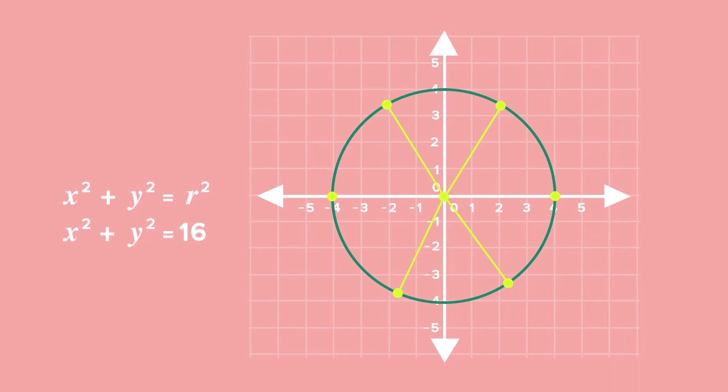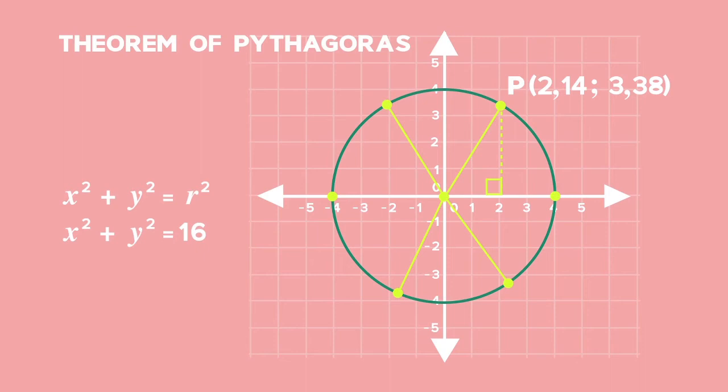You can take any point P on the circumference and make a right angle triangle using the radius. That means that you can use the theorem of Pythagoras to calculate the radius of the circle using the x and y values of point P.